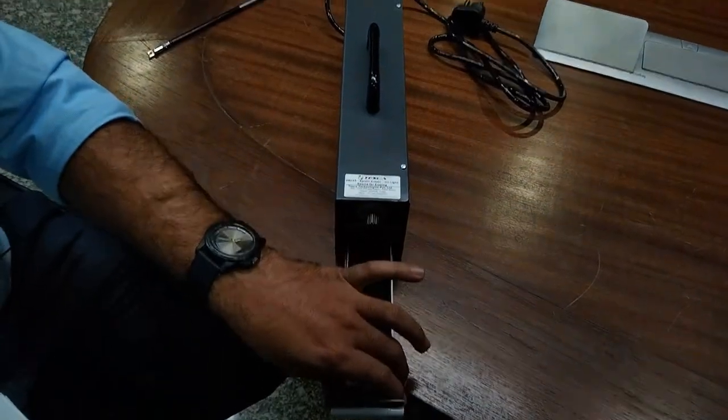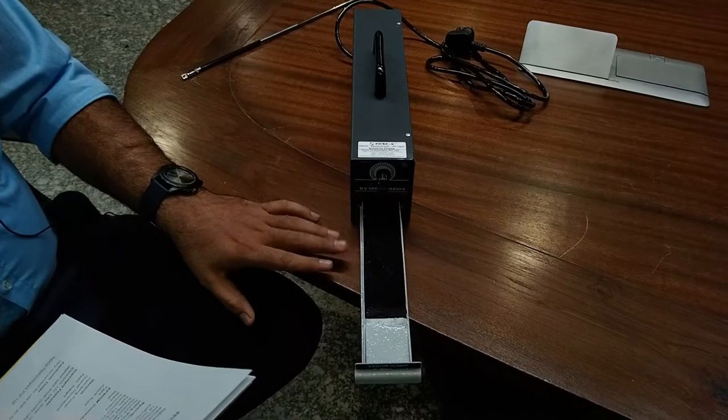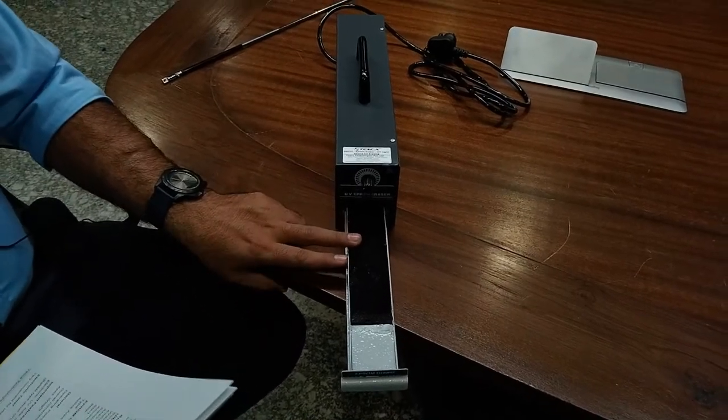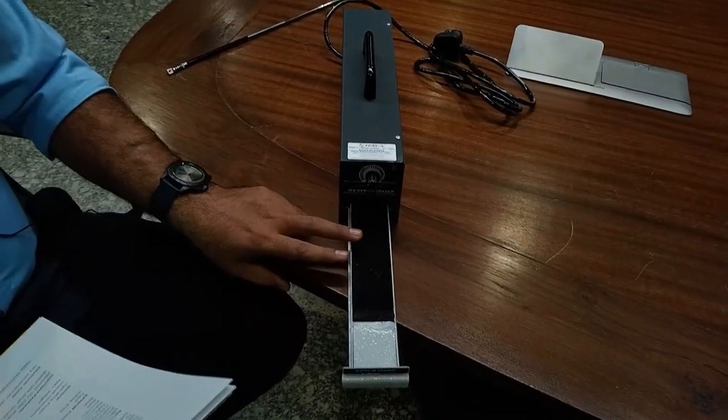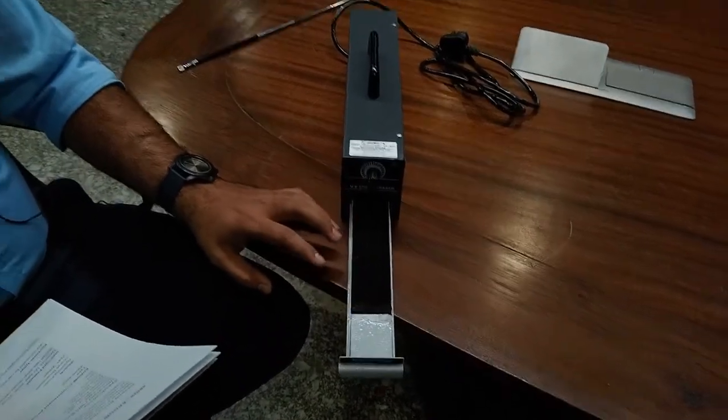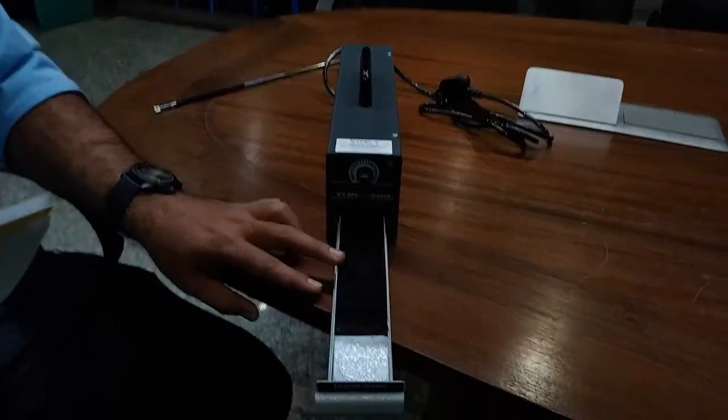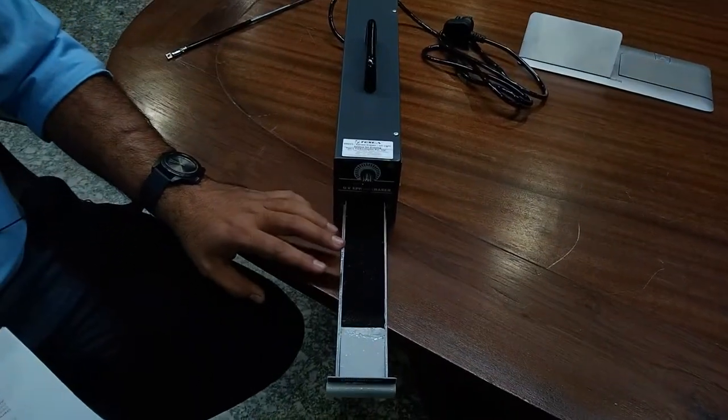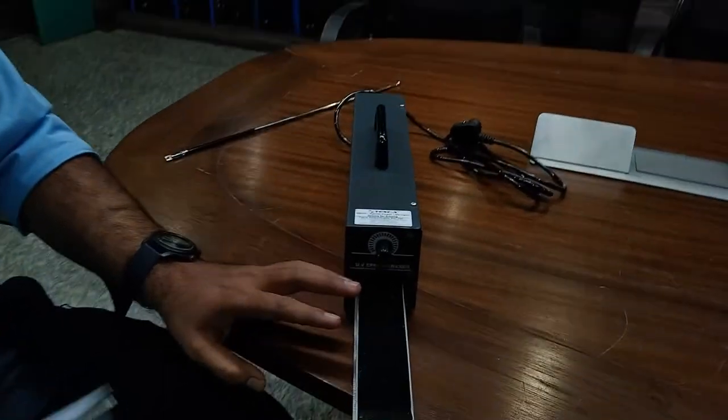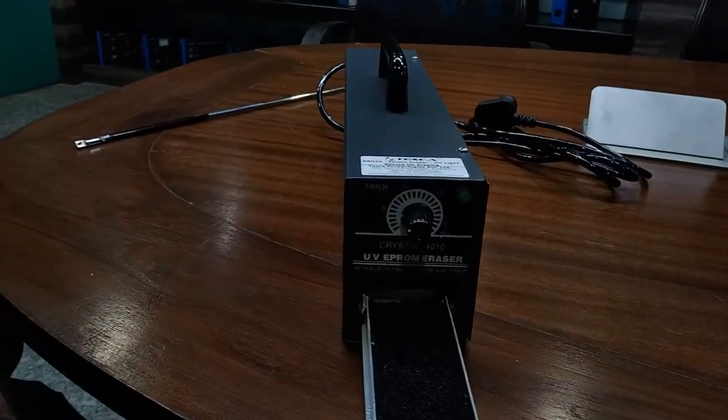This is the drawer of the EPROM in which you can place your EPROMs of different types. The active area of this EPROM compartment can hold 8 of 24 to 28 pin EPROMs, or 6 of 32 pin EPROMs, or 4 of 40 pin EPROMs for erasing them.